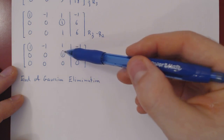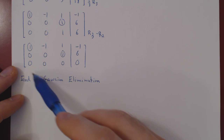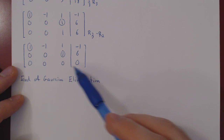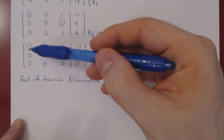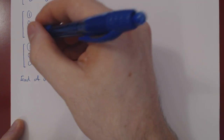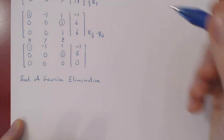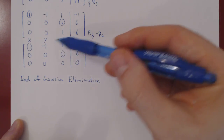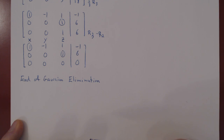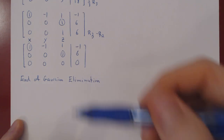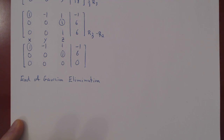We have obtained every possible leading one, killed all entries below them, and the row of zeros is at the bottom. This matrix is now in row echelon form — the result of applying Gaussian elimination. We have a leading one for x and a leading one for z. The column for x, column for y, and column for z show that x and z are leading variables, but y does not have a leading one, so y is a free variable.